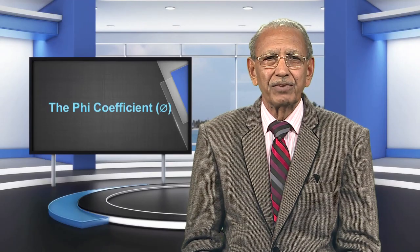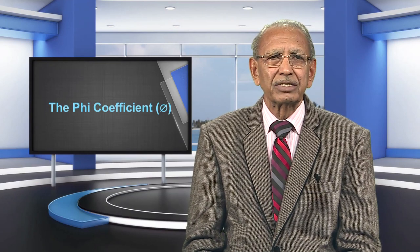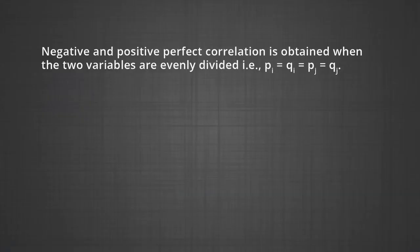The phi coefficient has been widely used in statistical work associated with psychological tests. Usually when researchers speak of correlation between dichotomously scored test items, the reference is to the phi coefficient. The phi coefficient is a particular case of product moment correlation. When integers 1 and 0 are assigned to represent the two categories of each variable, values of phi coefficient range between -1 and +1 and are influenced by marginal totals. Negative and positive perfect correlation is obtained when the two variables are evenly divided, that is p_i = q_i = p_j = q_j.